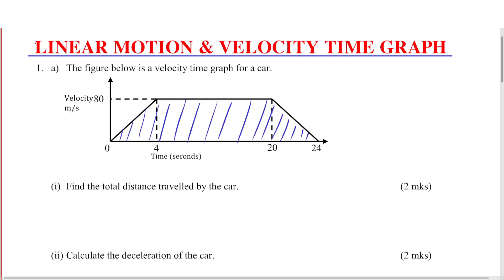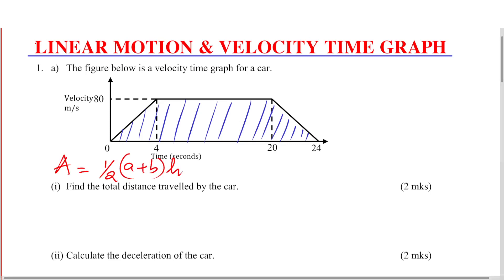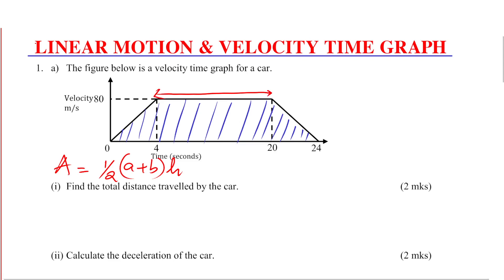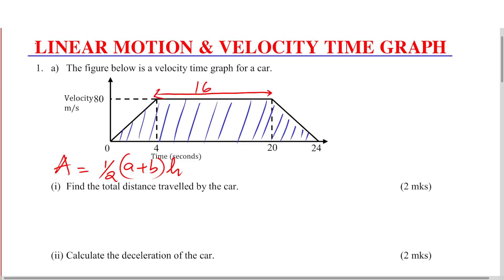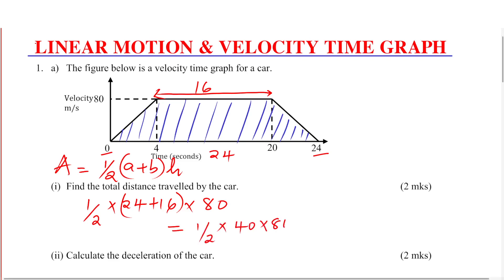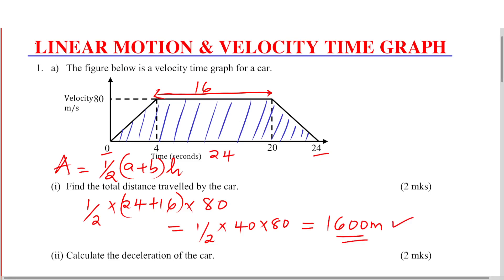The area of a trapezium is given by half times the sum of the two parallel sides times the height. The two parallel sides are: the first from 4 to 20, which is 16, and the whole length from 0 to 24, which is 24. The height is the speed from 0 to 80. So area equals half times (24 + 16) times 80, giving half times 40 times 80, which equals 1600 meters. That is the total distance traveled by the car.